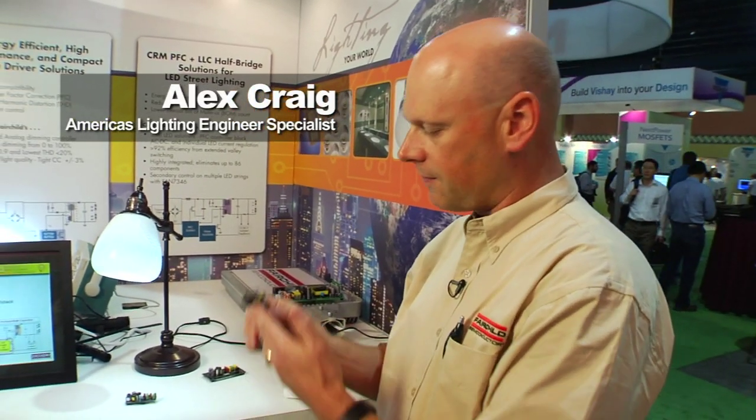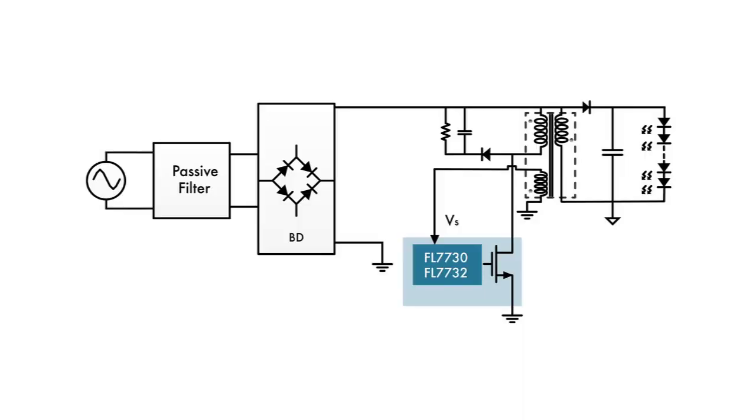So phase modulated dimming input. It can also dim via an analog input or a PWM input signal. It's designed to be a very cost-effective, low-cost solution and have all the high power factor and THD requirements that are needed.